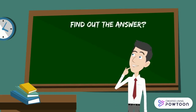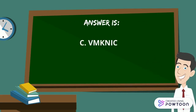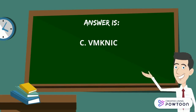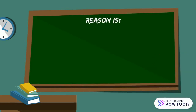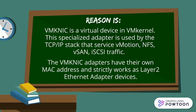The answer is C, vmknic. The reason is vmknic is a virtual device in the VMkernel. This specialized adapter is used by the TCP/IP stack that services vMotion, NFS, vSAN, and iSCSI traffic. This vmknic adapter has its own MAC address and strictly works as a Layer 2 Ethernet adapter device.